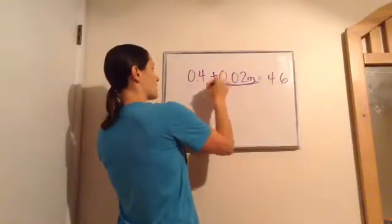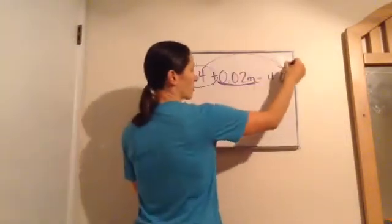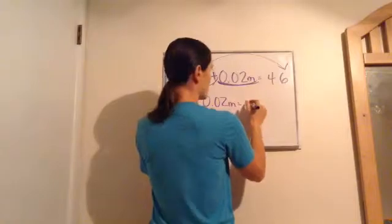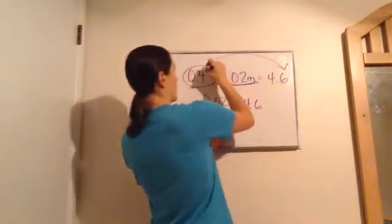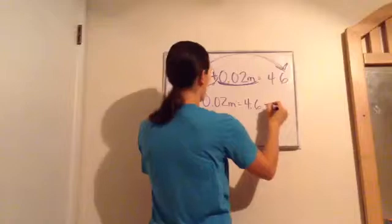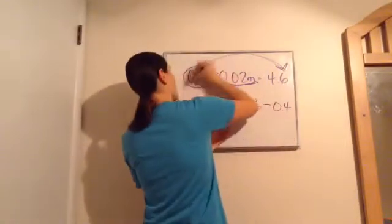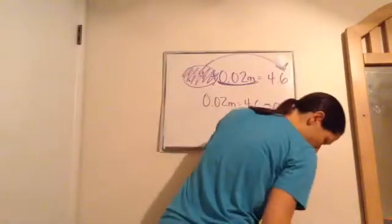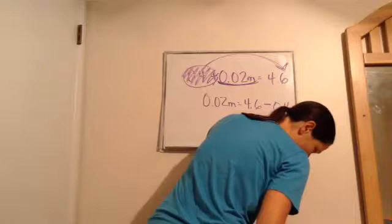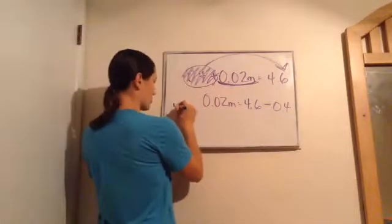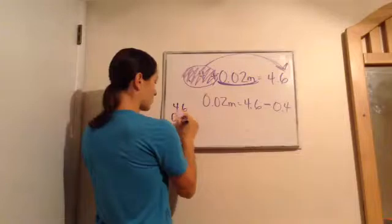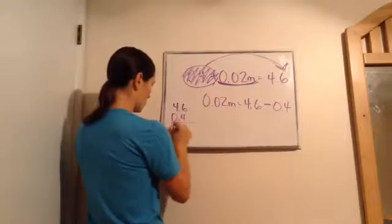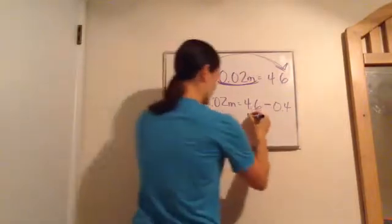So, since this is plus 0.4, when we move it across the equals, it becomes minus. So, I'm going to bring this down. 0.02m equals 4.6. And then, when I bring this 0.4 over, it becomes minus 0.4. Done with that. Now, let's go and work this problem. And I'm just going to look over here just so I don't do the math of it. Let's just do it. 4.6 minus 0.4. 4.2. So, we get 4.2 right here.